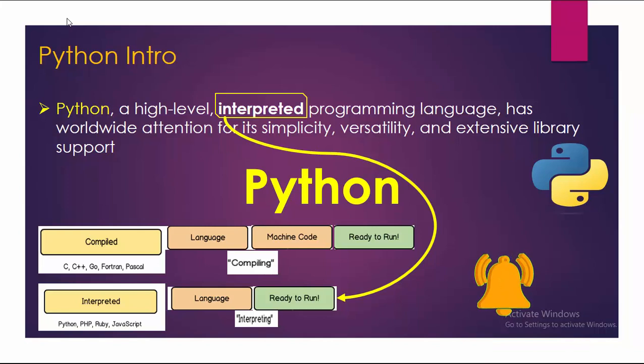As you can see, the earlier languages have the compiler which turns the source code into machine code and then makes it ready to run. Whereas in case of Python, it is interpreted and is ready to run.